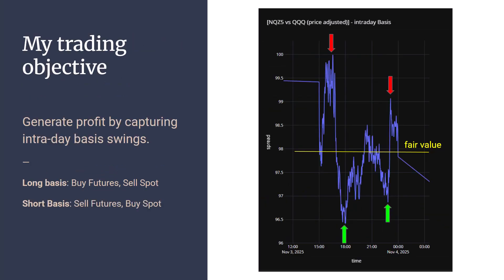Now that you understand what basis is, let's have a look at this intraday basis chart. This chart represents the basis between the NQZ5 futures contract and QQQ ETF. The basis ranges between 100 and 96.5. What I've plotted here is some fair value level. If the basis is above this fair value level, we want to sell the basis. If basis is below this fair value level, we want to buy basis. Our objective is to generate profit by capturing these intraday basis swings. Long basis or buying basis means we want to buy futures and sell the spot product at the same time. By shorting the basis, we are selling the futures and then buying the spot at the same time.